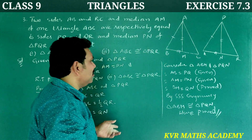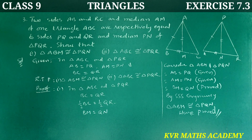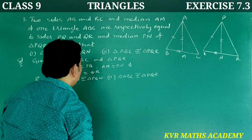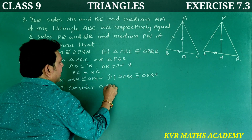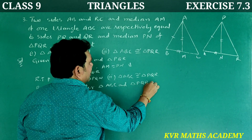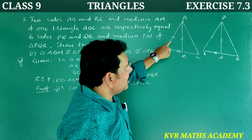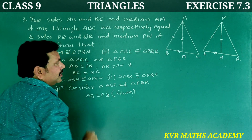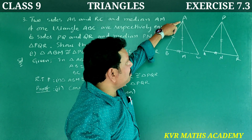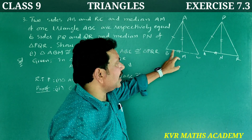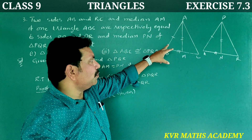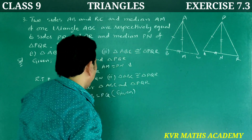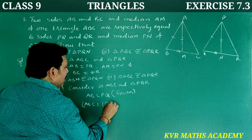Now for the second part — prove that triangle ABC is congruent to triangle PQR. Since triangle ABM is congruent to triangle PQN, by CPCT, angle ABC is equal to angle PQR.